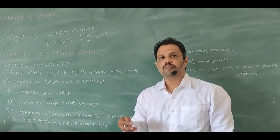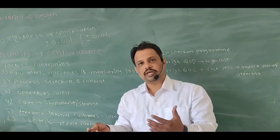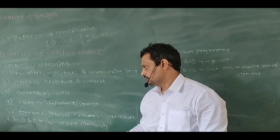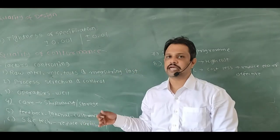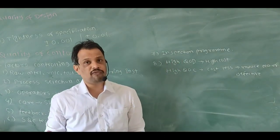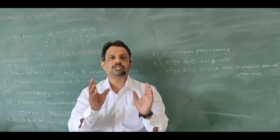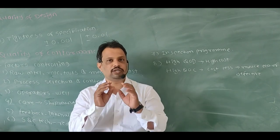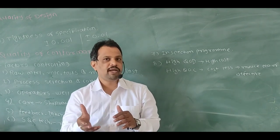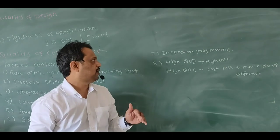Feedback should come from both sides - internally within the company and also from the customer. From that feedback you have to take corrective action to improve your quality of conformance. After that, SQC techniques - Statistical Quality Control techniques are used to reduce variation in your manufacturing process. After that, inspection program - your inspection program should be designed in such a way that your whole system is seen through this inspection program. At the same time, by implementing this inspection program, faulty or defective products should automatically come out from your manufacturing line.